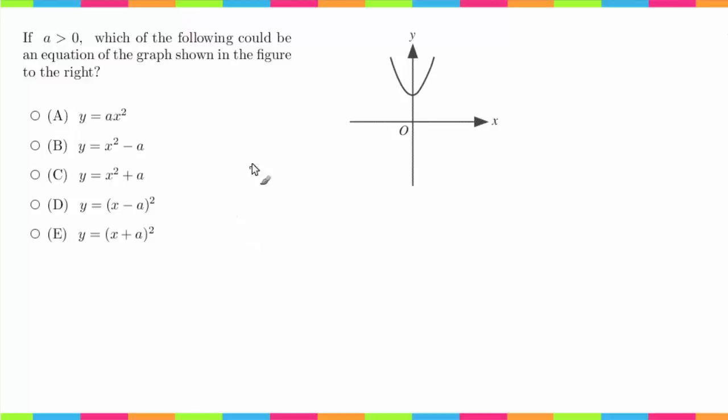So I call that vertical shifts. Whenever a is not attached to x—I consider this being attached to it because it's in the parentheses—these are horizontal shifts.